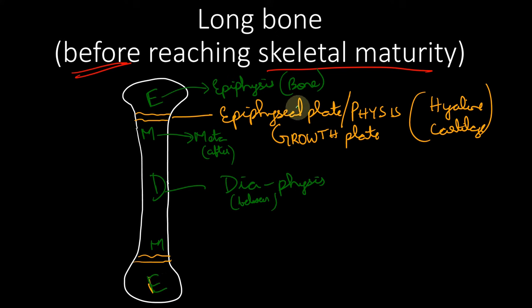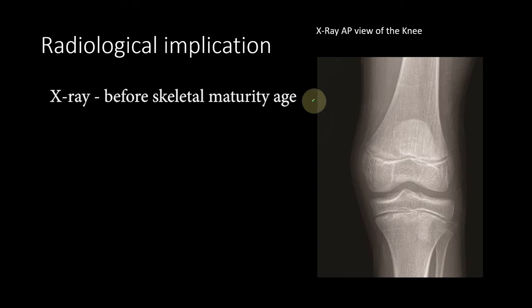This is very important, especially when you look at a common X-ray of a long bone. This is a knee X-ray where you can see the lower end of the femur and the upper end of the tibia. You can see this is the epiphyseal plate.